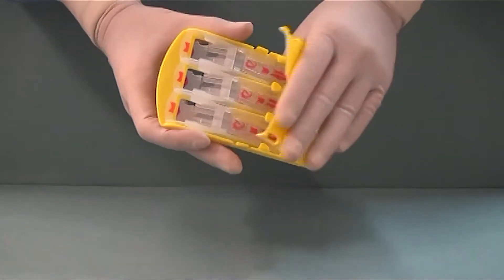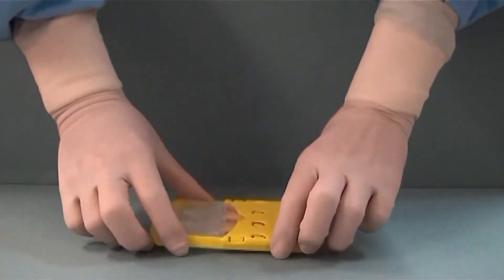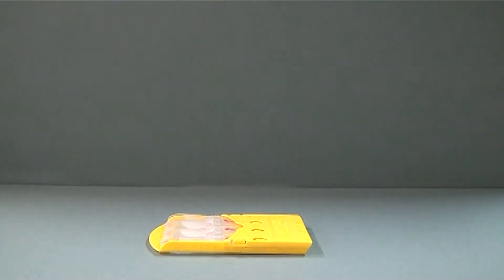When finished, fold the cover back over the cartridges. The cassette is now ready for counting and disposal.